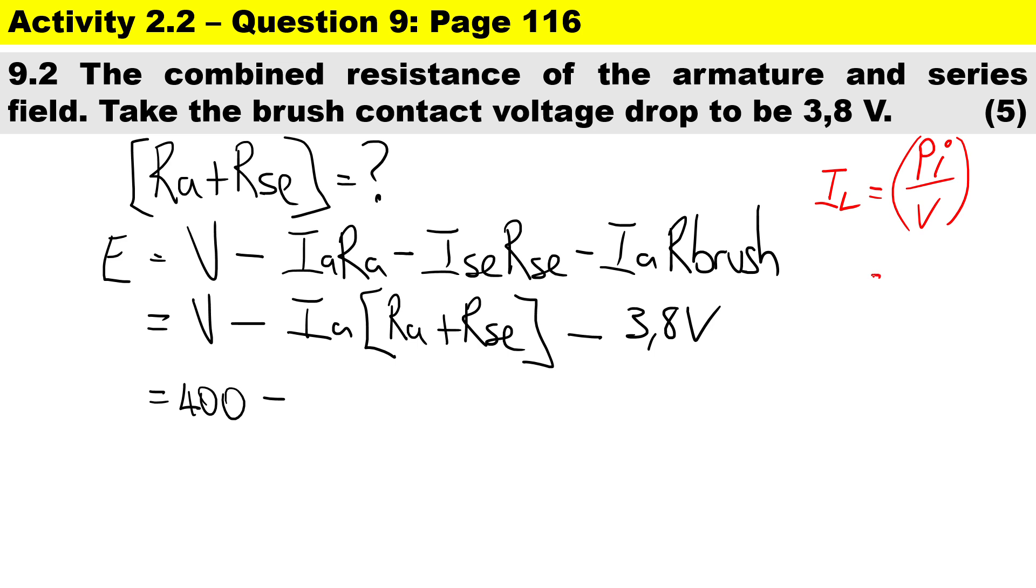That was 22,222 divided by the voltage of 400, so our current we get here is 55.555 amps. So current stays the same in series, so that's going to be 55.555 and we do not know what the resistance is but we're going to be working out both minus 3.8.